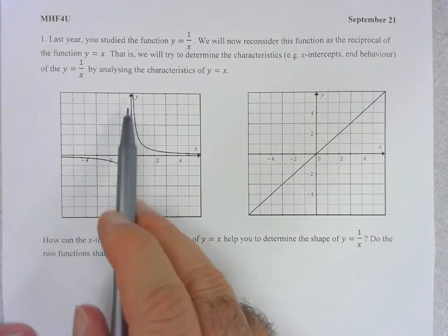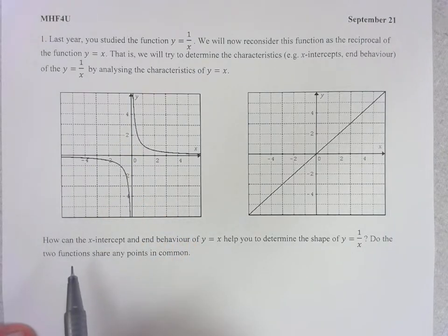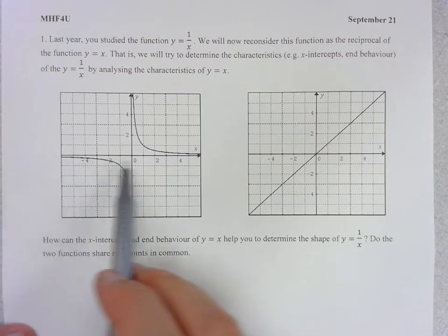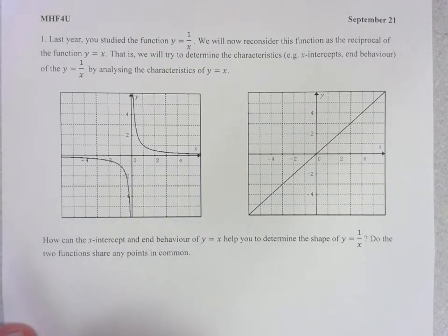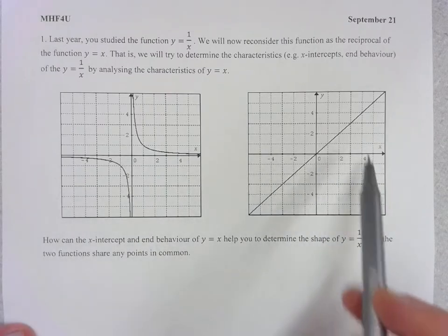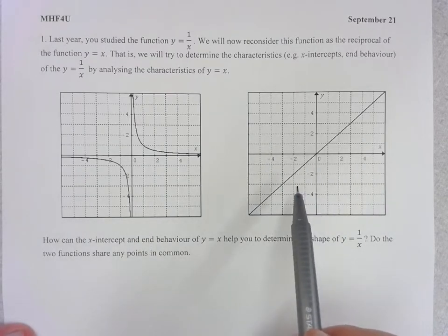Why should it have this asymptote at x equals zero? Why should it have this asymptote at y equals zero? Are there any special points on both of these functions that they both share? And why do they share those points?